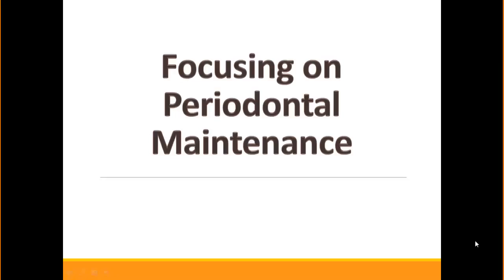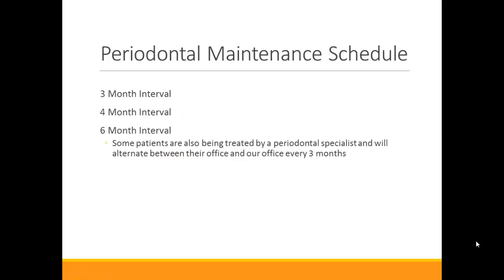This PowerPoint will be focusing on periodontal maintenance. For the periodontal maintenance schedule, we typically schedule at a 3-month interval, a 4-month interval, and sometimes a 6-month interval. These would be patients that are also being treated by a periodontal specialist and will alternate between their office and our office every 3 months.